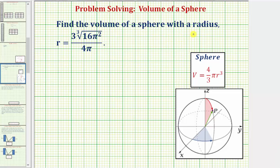We want to find the volume of a sphere with a given radius. A sphere is pictured here, and the volume of a sphere is equal to four-thirds pi r cubed.